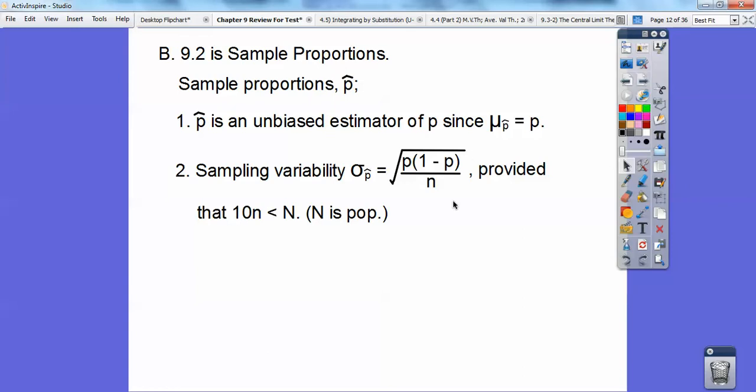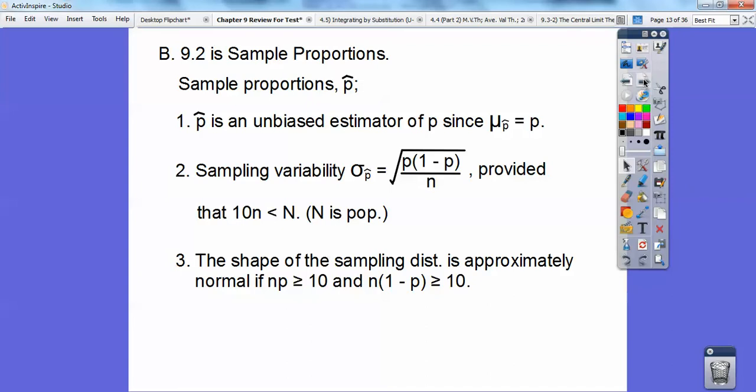We'll do more in chapter 10 or 11 when we get to t-distributions. Sampling variability, this says my standard deviation of my proportions, my sampling proportions, equals the square root of population p times 1 minus p all over n, provided that 10n is less than your population size. And the shape of the sampling distribution is approximately normal if n times p is greater than or equal to 10, and so is n times 1 minus p greater than or equal to 10.